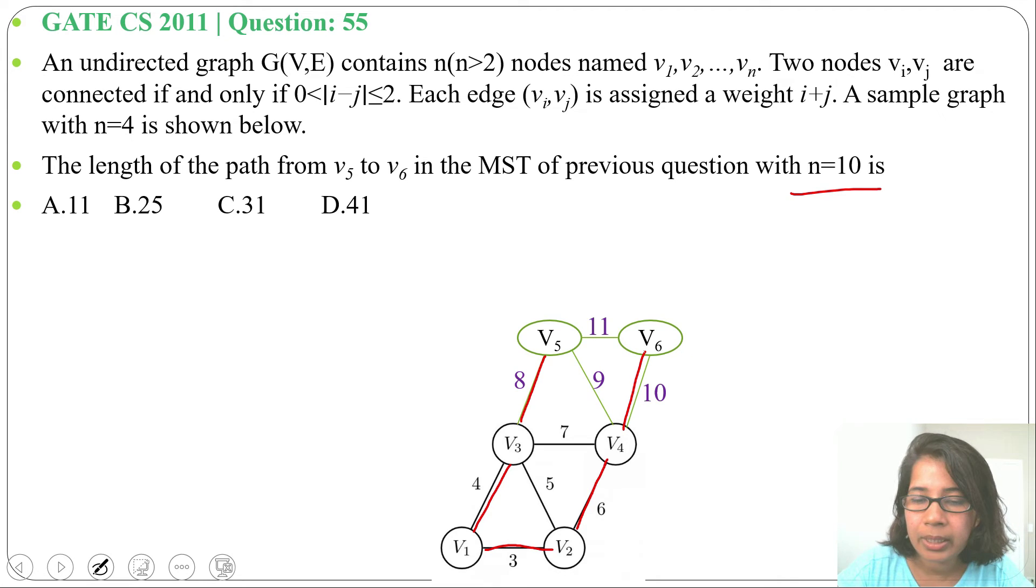We'll include v4 to v6, weight 10. So this will be the spanning tree. If we consider v7, v8, then v9, v10, we'll just use these edges for the spanning tree.